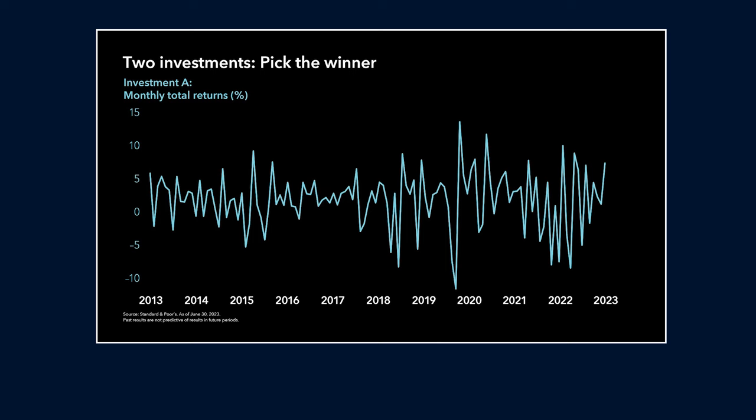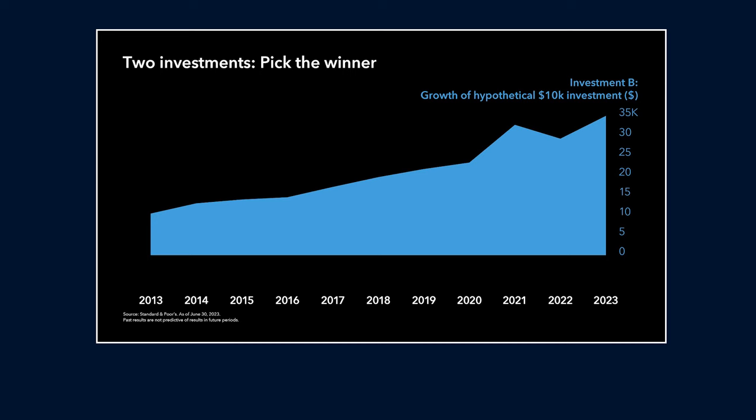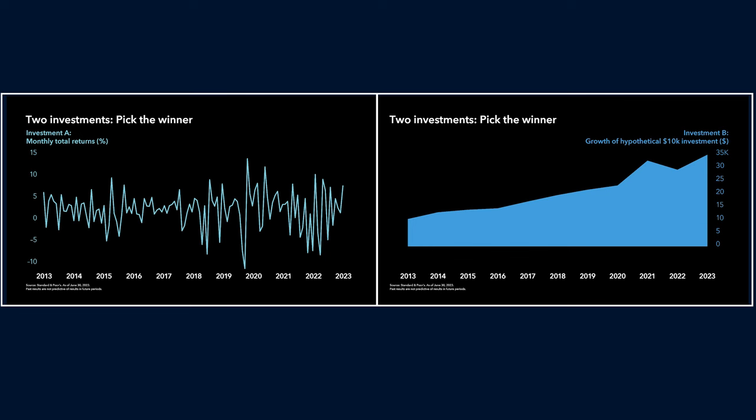The second chart shows the growth of Investment B for the same 10 years. During this time, your investment would have more than tripled. Now, which one would you prefer?